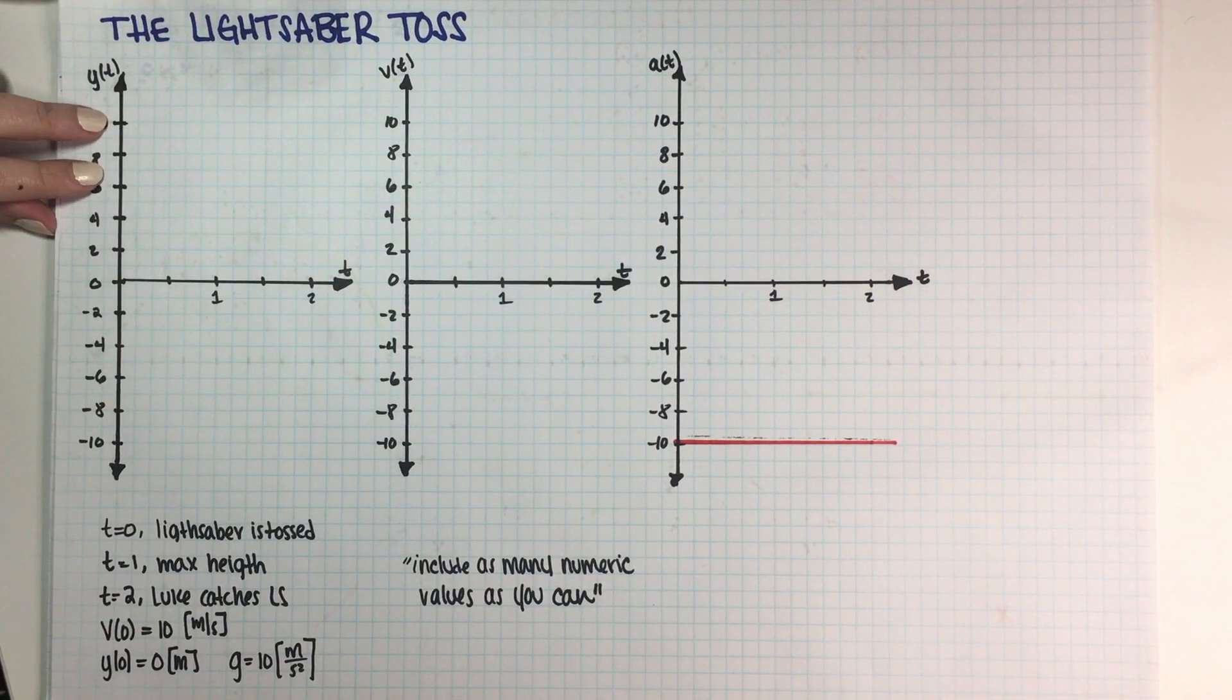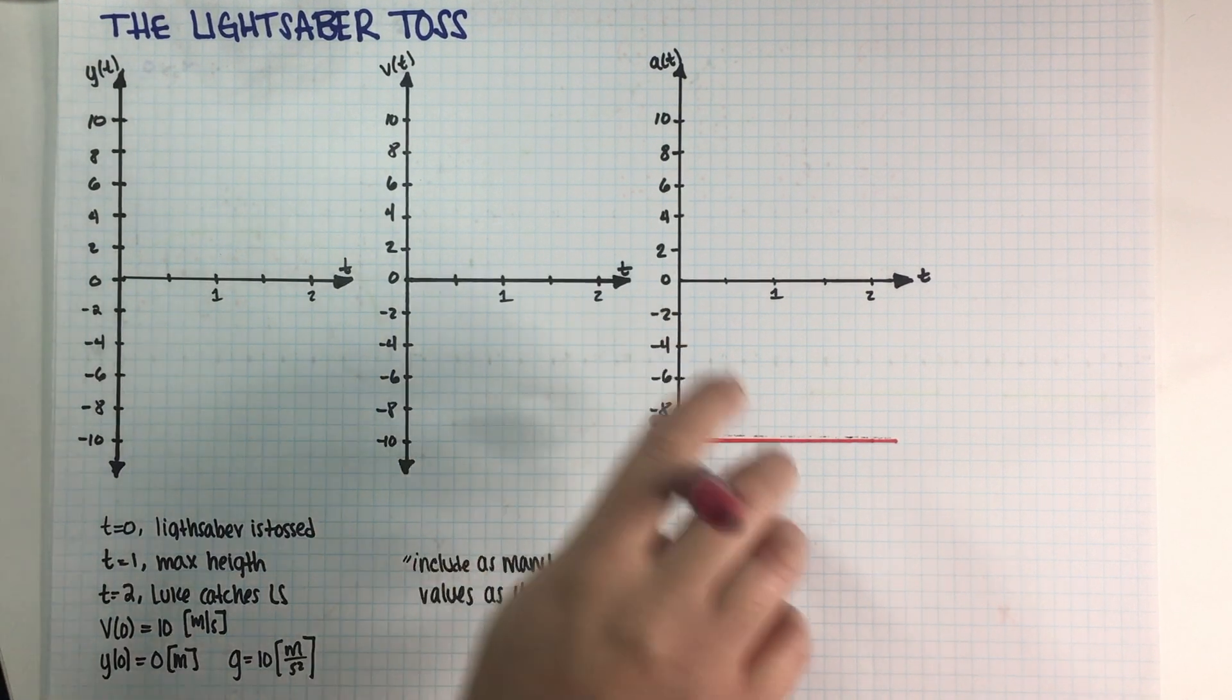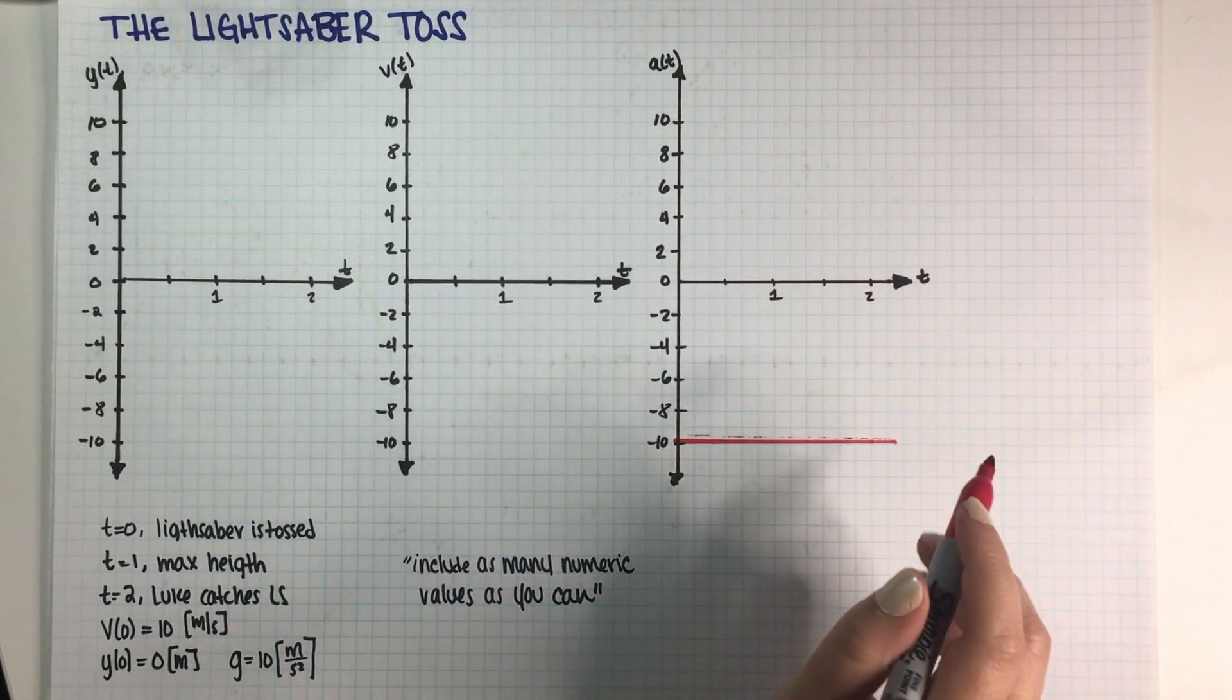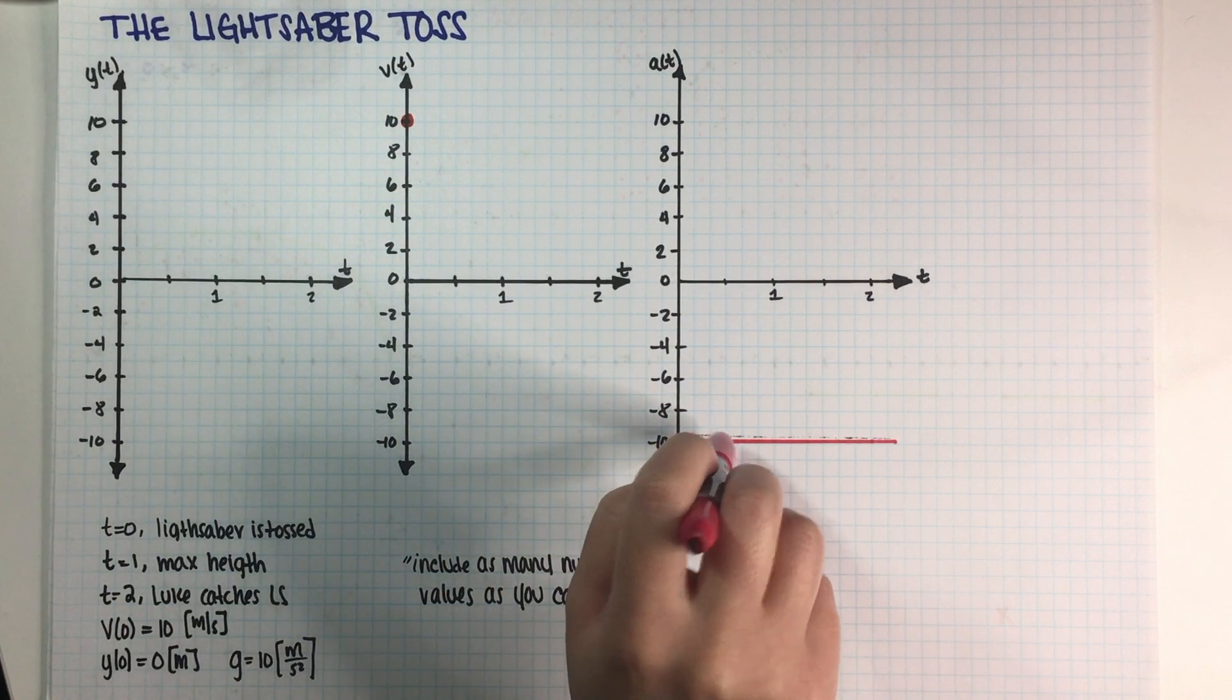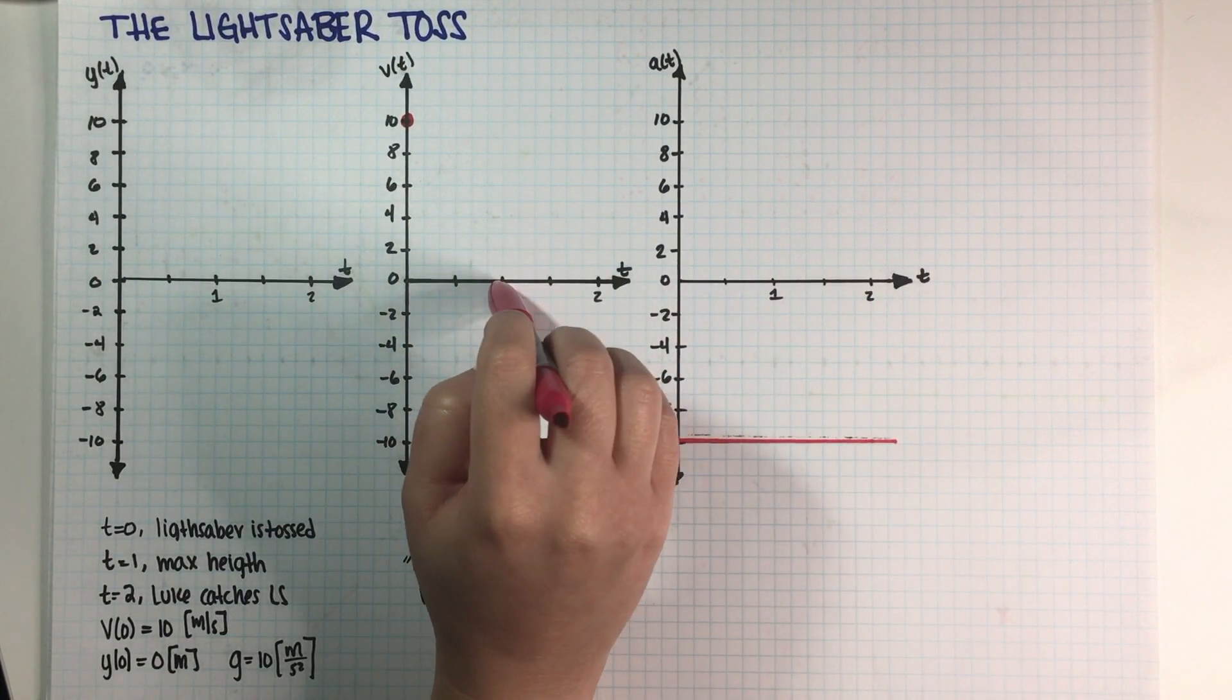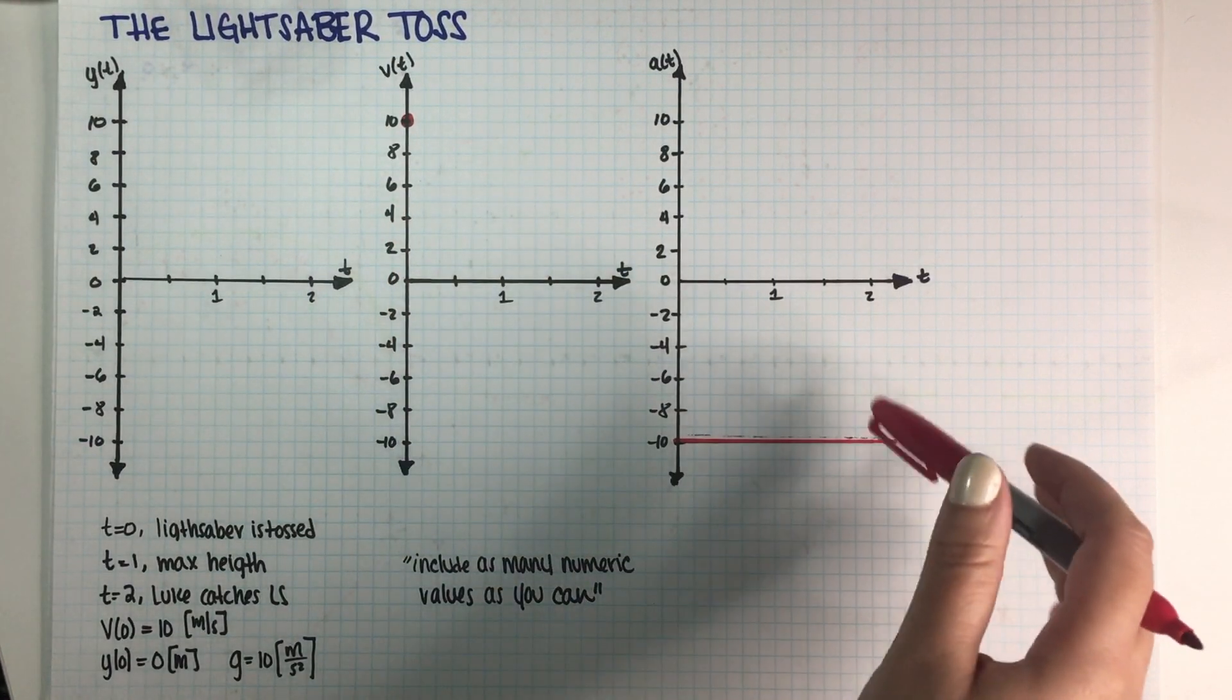So now for the velocity graph there are several ways in which we can figure this out. There is the I like to put numbers on a calculator way, and there's the more visual way. The first way is just really understanding what acceleration and velocity, how they are connected. Now the initial velocity is equal to 10, so I'm gonna start my graph here. And if I understand that acceleration is the slope of velocity, then I know that having an acceleration of negative 10 means that for every second that I move to the right, like for every second that passes, I'm moving 10 meters per second down. So that is what a slope is.